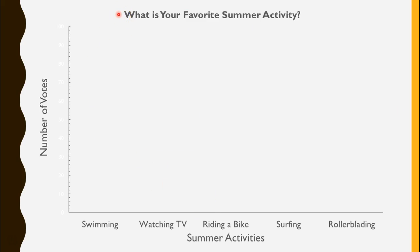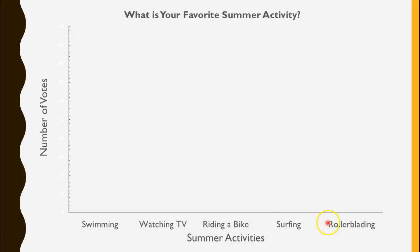When making a bar graph, what's really important is that you have a title so that anybody who glances at your bar graph will know exactly what it's about — they can quickly look at the title and know, oh, this is about their favorite summer activity. You also need titles along the edge: the vertical axis and then the horizontal axis. I put the categories down here — the summer activities: swimming, watching TV, riding a bike, surfing, and rollerblading. The number of votes will determine the height of the bar.